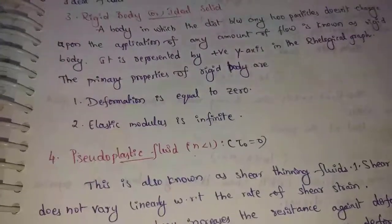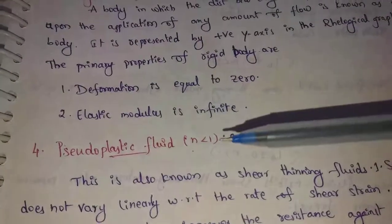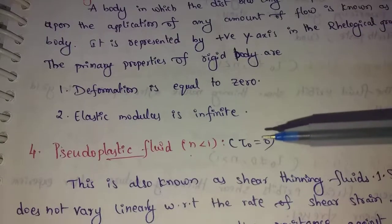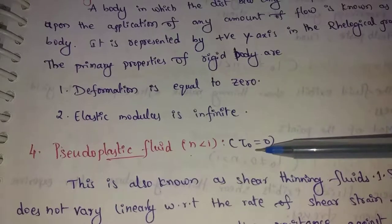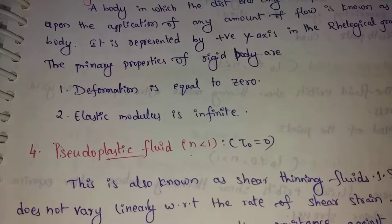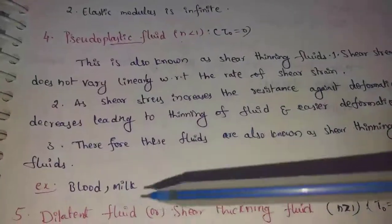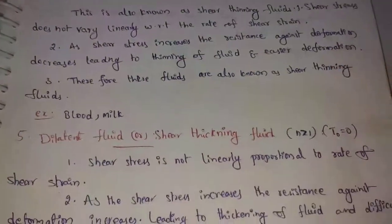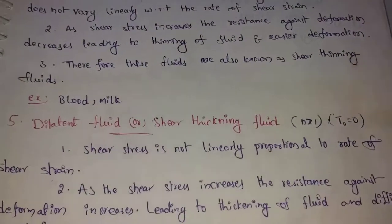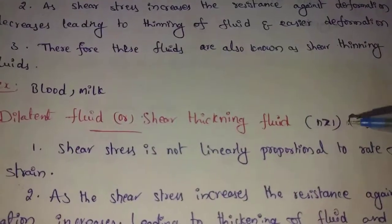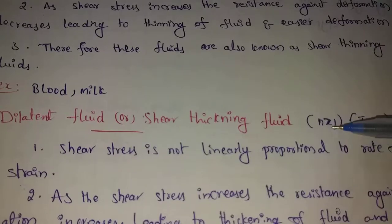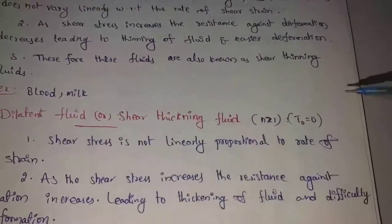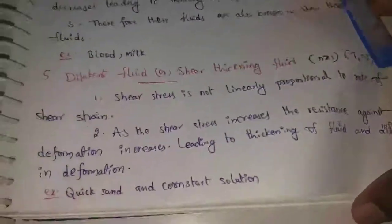Pseudoplastic fluid: the flow characteristic index n is less than one, and yield shear stress is equal to zero. Examples are blood and milk. Next, Dilatant Fluid — also called Shear Thickening Fluid. Here n is greater than 1 and yield shear stress is equal to zero. An example of dilatant fluid is quicksand.